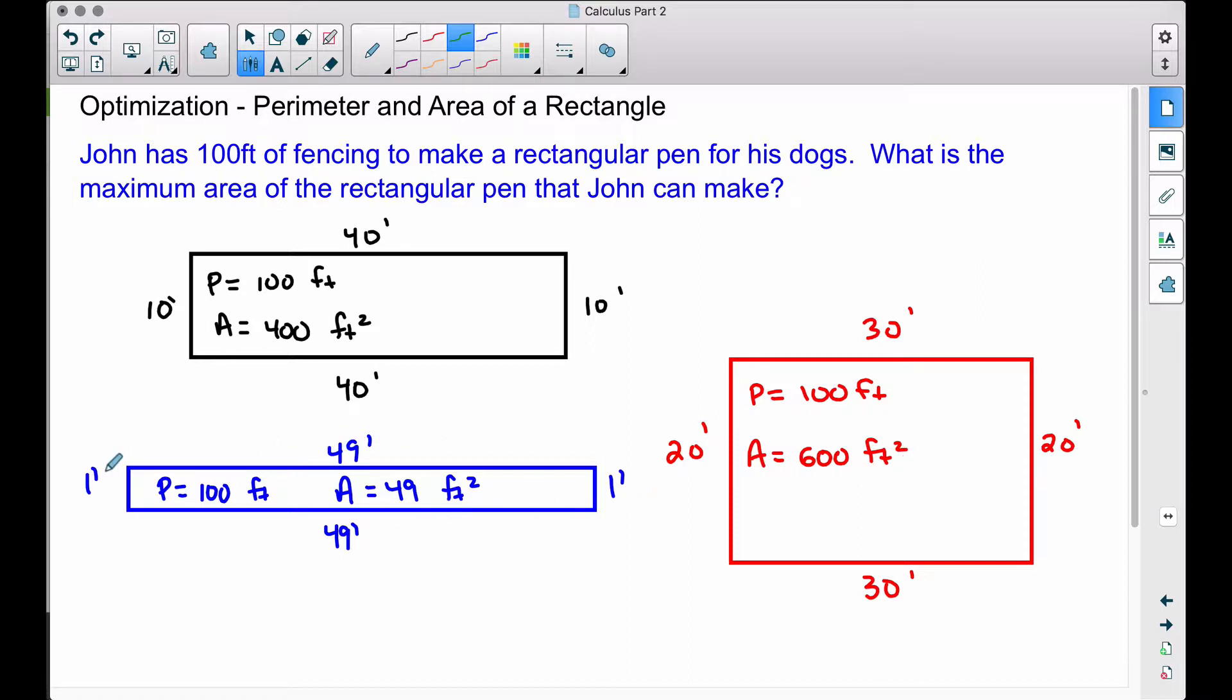And then this blue one here, 49 plus 1 plus 49 plus 1, we have a perimeter of 100 feet. The area of this rectangle is very small, 49 square feet.